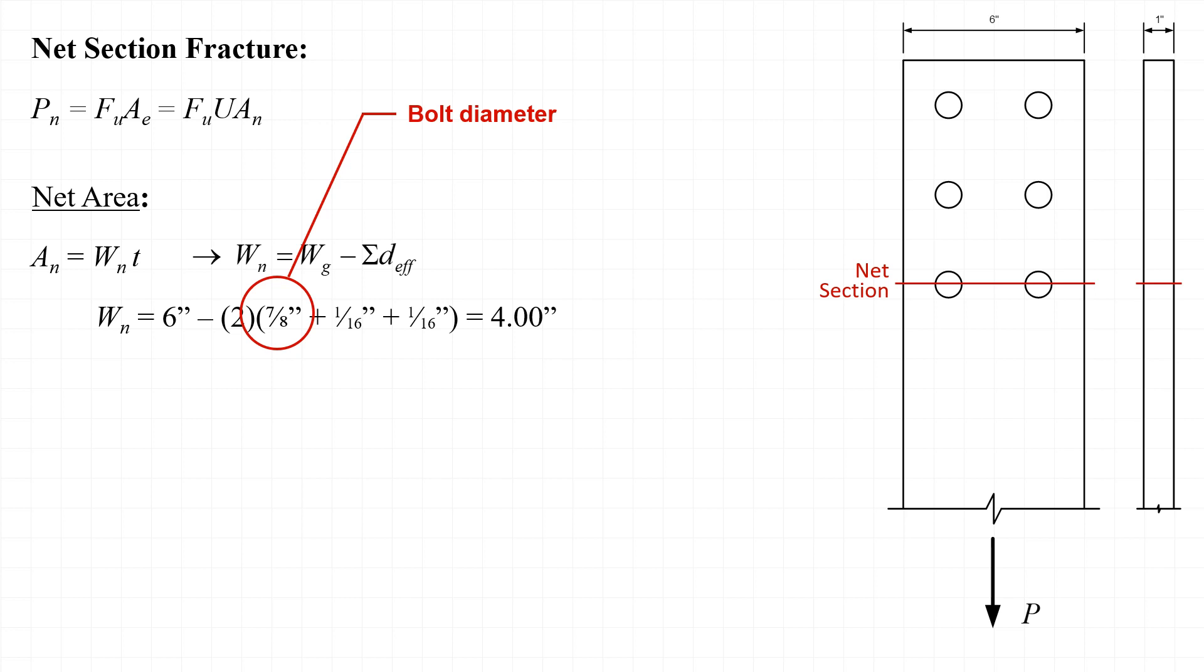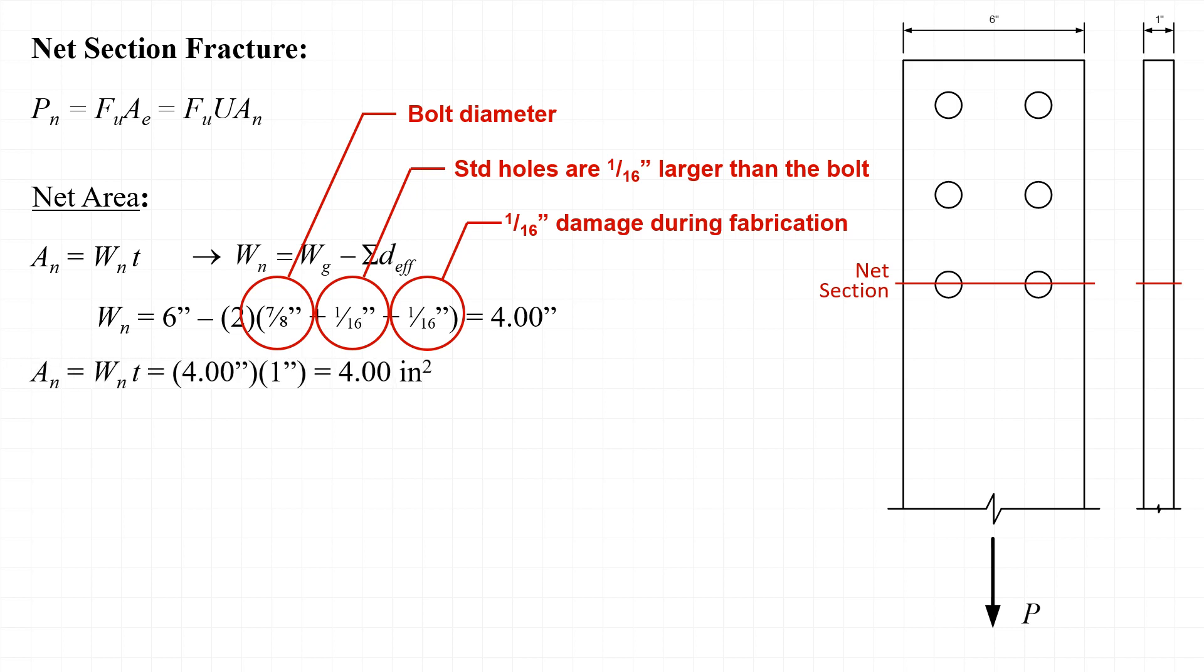plus a sixteenth of an inch, because the hole is a sixteenth of an inch larger than the bolt for a seven-eighths inch diameter bolt. And then we add on a second sixteenth of an inch for material that could possibly be damaged during the fabrication of the hole. So ultimately we end up with a net width of four inches. When we multiply by the plate thickness, we get the net area, which is four inches squared.